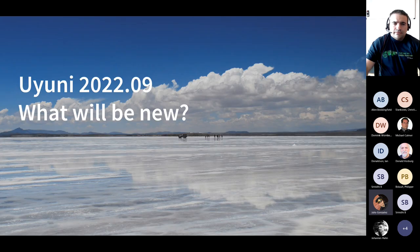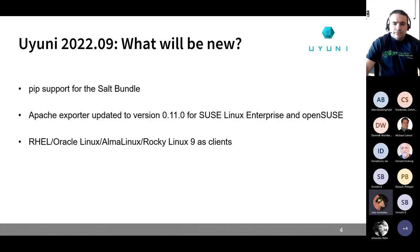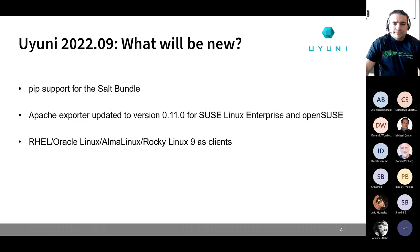What is going to be new with Uyuni 2022-09? We have three things so far. First is the pip support for the salt bundle. This now allows users to extend the functionality of the bundle salt minion with any extra Python packages. This works with states and works as a module, just keep in mind that as of today, even upstream, there are some things you can do as a module but cannot do from a state. There will be links at the release notes for Uyuni.